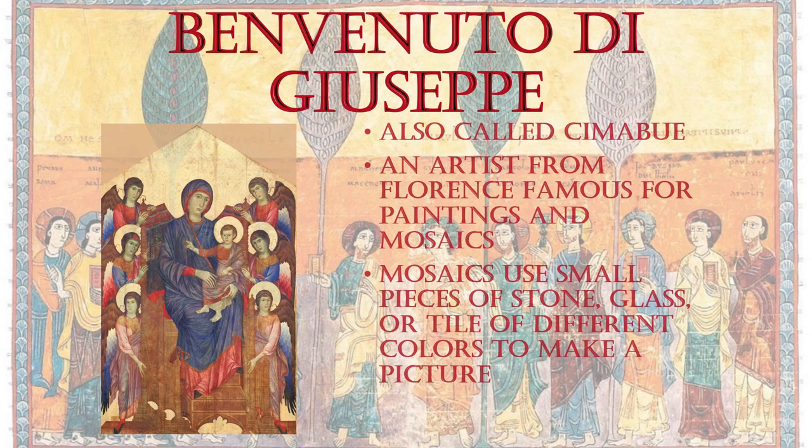Benvenuto di Giuseppe, also called Cimabue, was an artist from Florence, famous for paintings and mosaics. Mosaics use small pieces of stone, glass, or tile of different colors to make a picture.